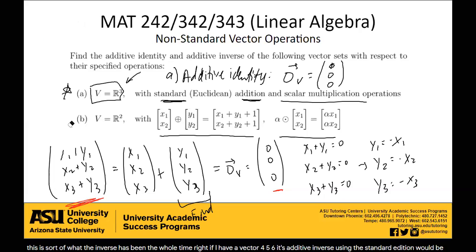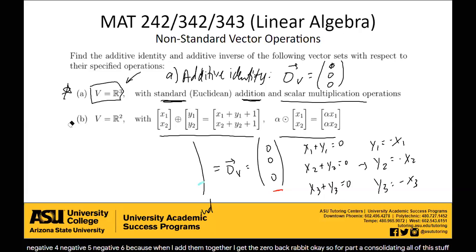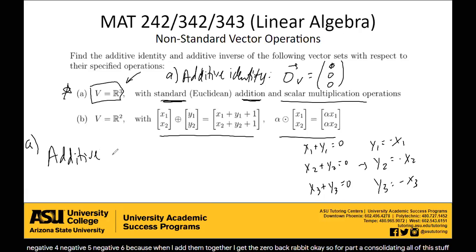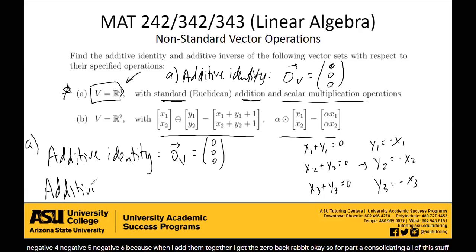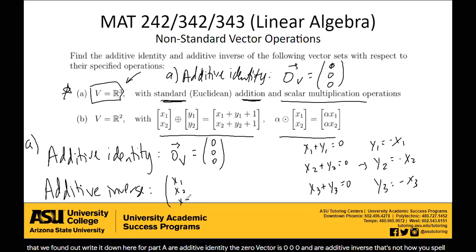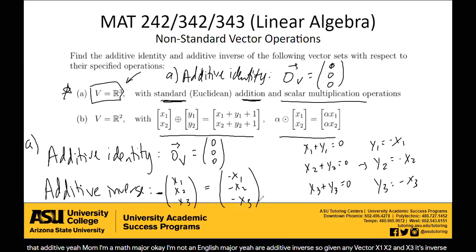For Part A, consolidating everything: our additive identity, the zero vector, is 0, 0, 0. Our additive inverse, given a vector x1, x2, x3, is negative x1, negative x2, negative x3. We have found the additive identity and additive inverse for any arbitrary vector. That's Part A done.